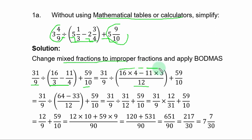We are still on the bracket. You have 31 over 9 divided by bracket open. If you multiply here, you have 64 minus 33 all over 12, close the bracket, plus 59 over 10.